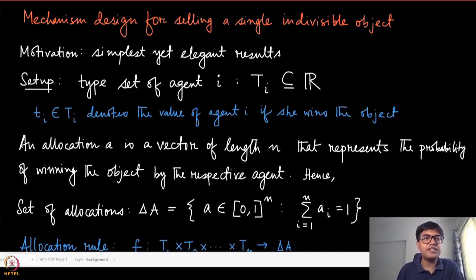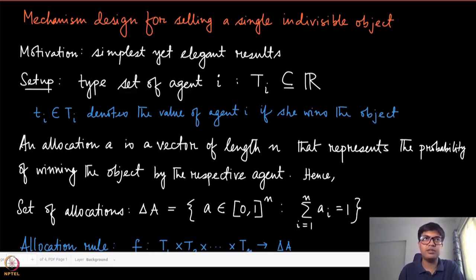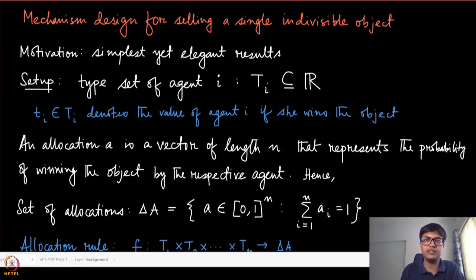Let us now start looking at a very simple yet insightful domain of mechanism design with transfers: the domain of single indivisible object allocation. We have already seen one example, one mechanism which is truthful in this domain, namely the second price auction. Here we will not only try to characterize which other mechanisms are also truthful in this context, but we will also try to maximize the revenue earned for the auctioneer.